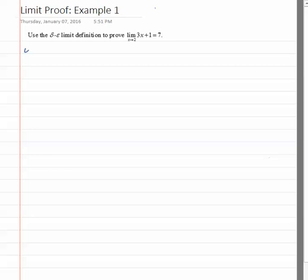First of all, let's recall what it is we want to show. According to the definition, we want to show that if we're given an arbitrary epsilon greater than 0, then we should be able to find, based on that epsilon, a delta greater than 0,